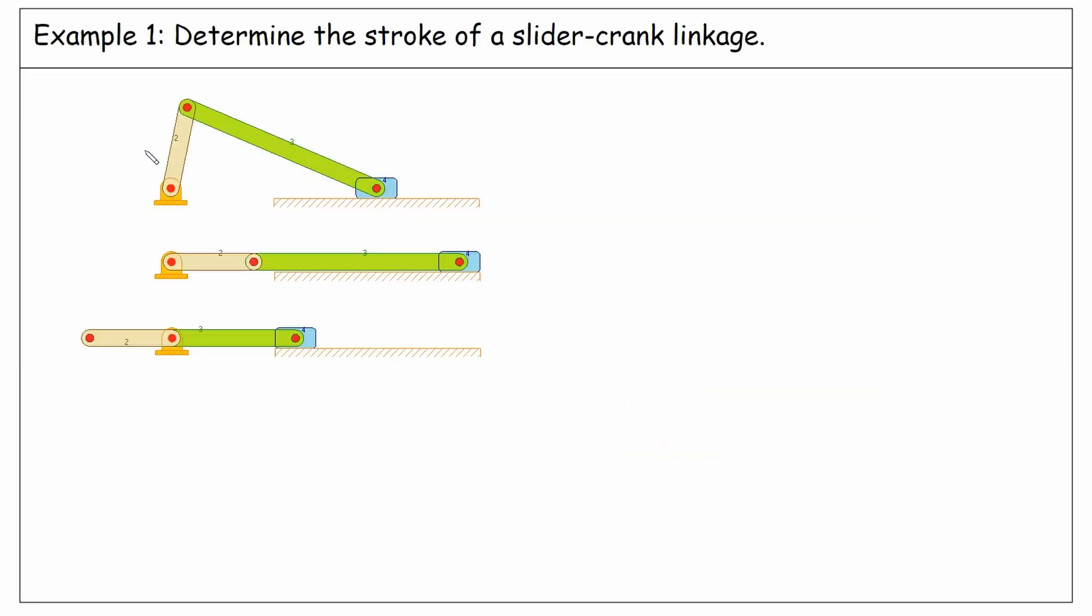Let's see how we can find the stroke. Firstly, we consider a slider crank linkage without offset. We assume the length of the crank A, and for the connecting rod B. One of the extreme positions happens when the crank and the connecting rod are aligned this way. So A plus B is the position of this point. X is A plus B if I consider X from here.